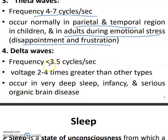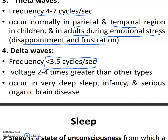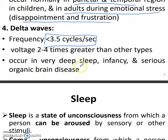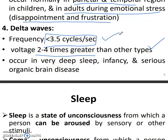Delta waves have the least frequency — 3.5 cycles per second — and the voltage is two to four times greater than other types. The voltage is maximum and the frequency is lowest. These occur in deep sleep, infancy, and serious organic brain disease.